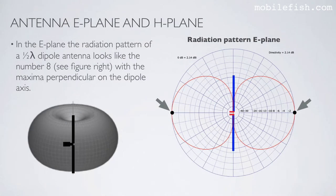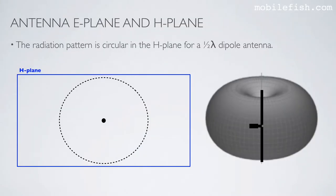In the E-plane, the radiation pattern of a half-wave dipole antenna looks like the number 8, with the maxima perpendicular on the dipole axis. The radiation pattern is circular in the H-plane for a half-wave dipole antenna.